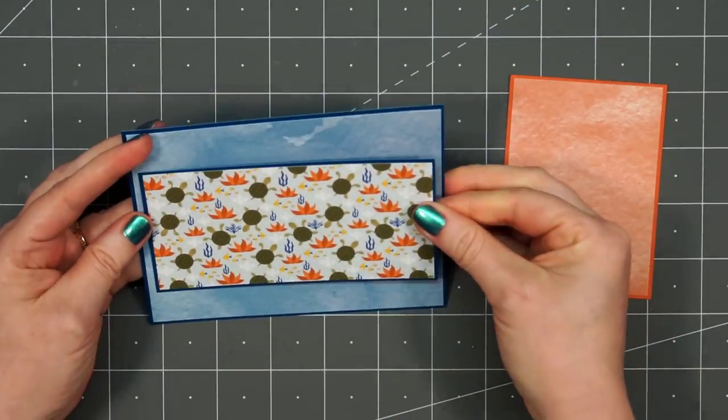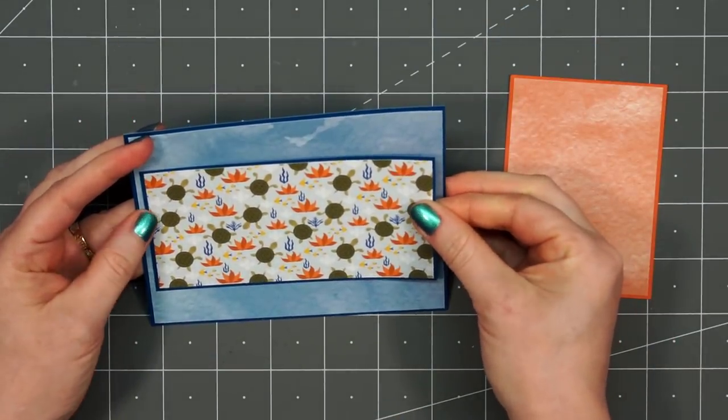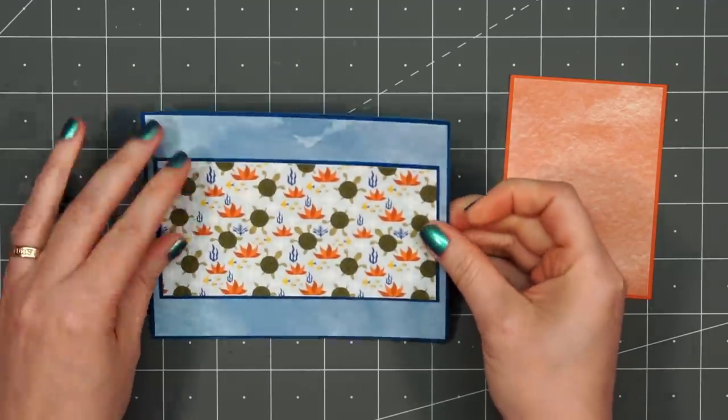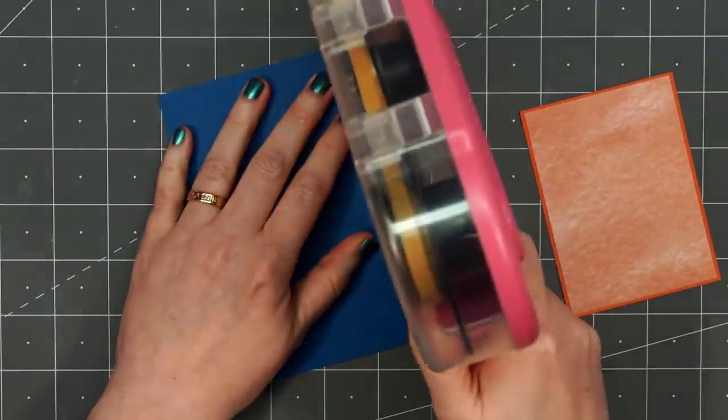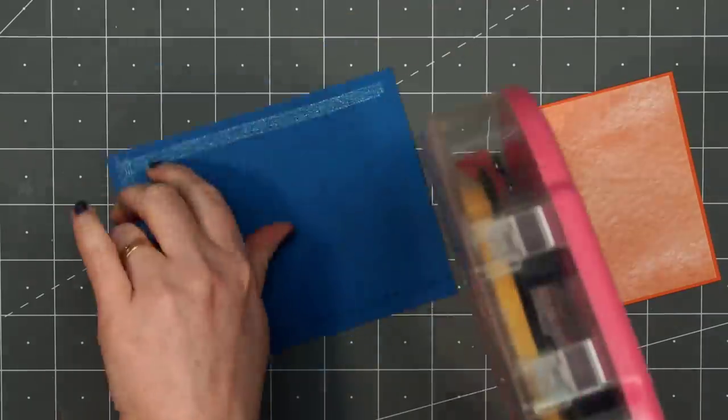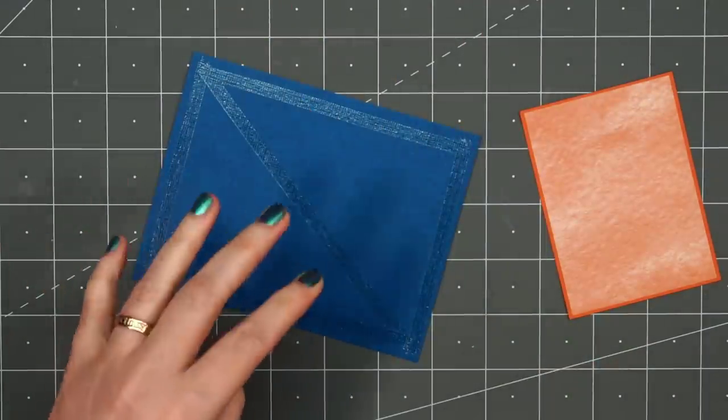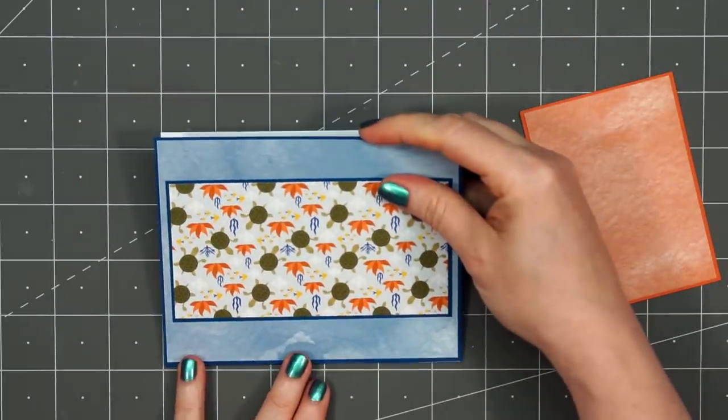I have this adorable turtle pattern paper. This is my favorite paper in the whole collection, layering that on the same blue cardstock. I'll put my card front onto a card base. For this card, I won't have any of the white card base showing.